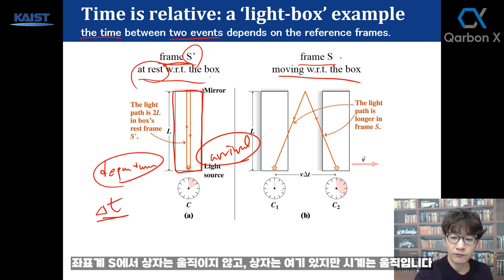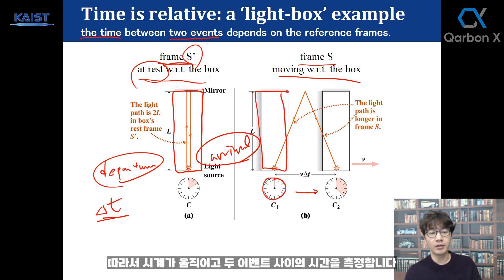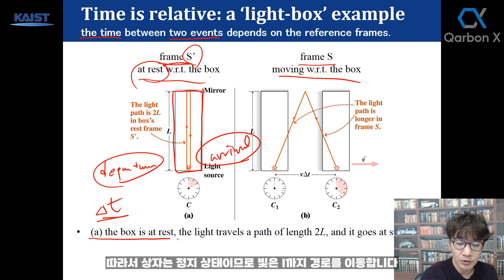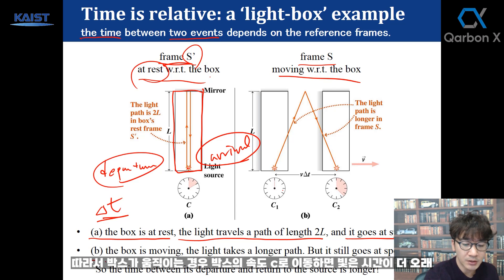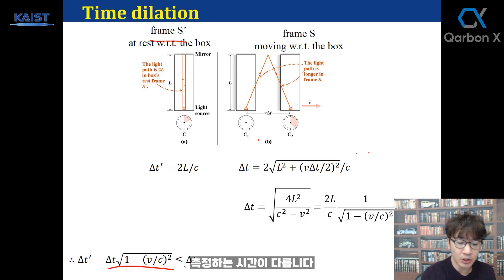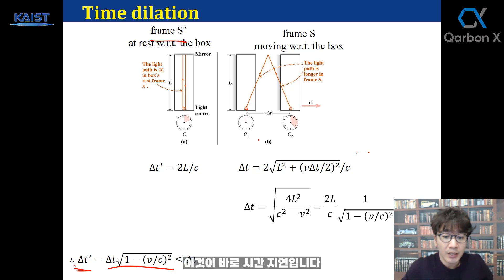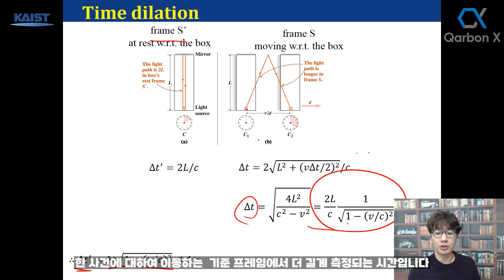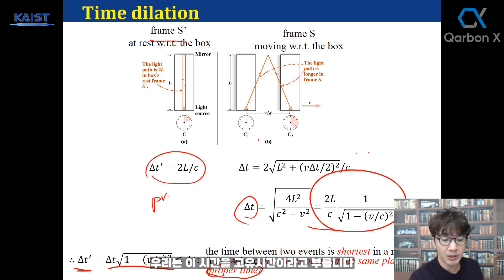Here in frame S, the box is not moving, but the clock is moving and measures the time between the two events. In case A, the box is at rest, so light travels the path to L at speed c. In case B, the box is moving, the light takes a longer time and travels a longer path. The time you measure is different — that's time dilation. Time is longer in the moving reference frame with respect to the event. This shortest time we call proper time.